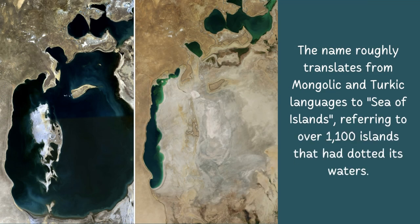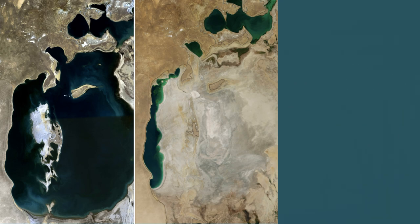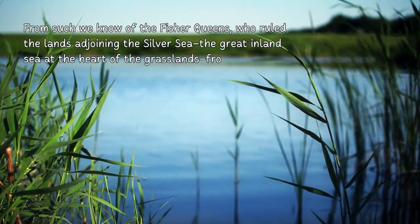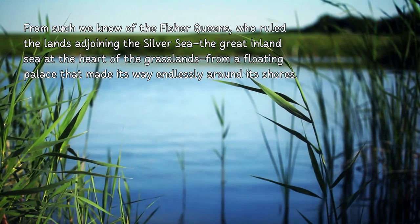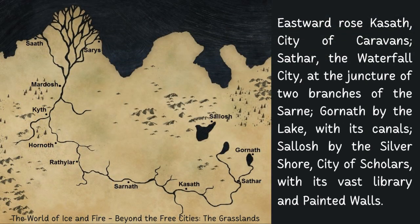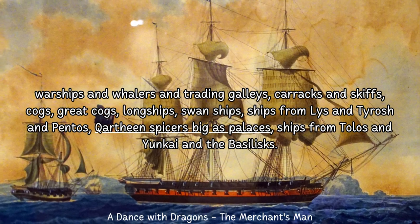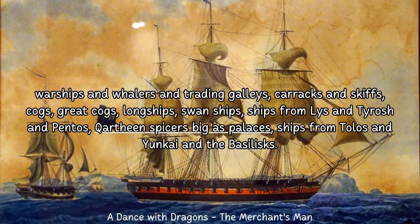Since I mentioned the Aral Sea, the people of the area are calling it the Sea of Islands because there were over 1,000 islands in it. So I think it's possible there were some islands in the Silver Sea. We know of the Fisher Queens who ruled the lands adjoining the Silver Sea — the great inland sea at the heart of the grasslands — from a floating palace that made its way endlessly around its shores. We know that Gornath by the lake, one of the Sarnori cities beside the Silver Sea, had canals, meaning it was a group of islands and the Sarnori were descendants of the Fisher Queens. By the way, I'll have a video on the Fisher Queens at some point, but I'm calling it now — the floating palace was 99% a ship. Qartheen called their ships floating palaces, and it was moving endlessly around the shores. Sounds like a ship to me.